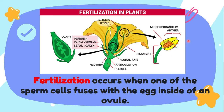The first vocabulary word that we have is fertilization. Fertilization happens when one of the sperm cells fuses with the egg inside of an ovule. That is called fertilization, and this does not happen just in plants but in humans and animals as well.